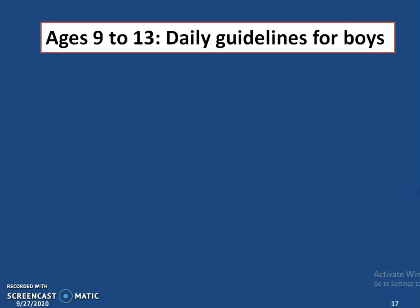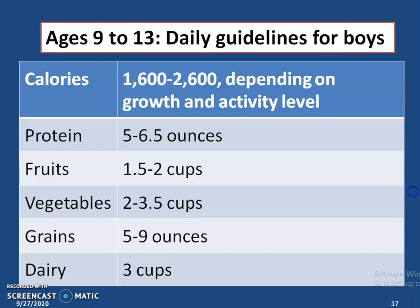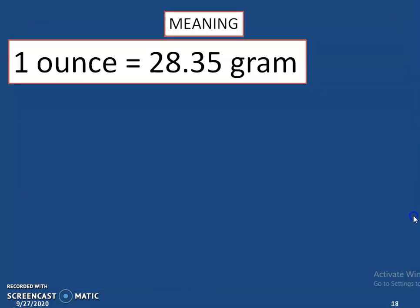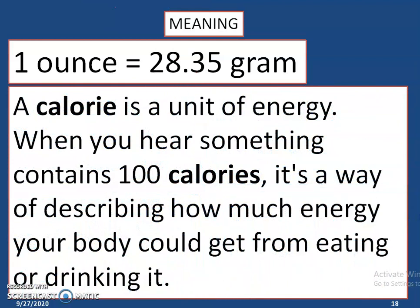Similarly, for boys in the same age group of 9 to 13, they should have 5 to 6.5 ounces of protein, 1.5 to 2 cups of fruits, 2 to 3.5 cups of vegetables, 5 to 9 ounces of grains, and 3 cups of dairy. Now, you may wonder what is 1 ounce — 1 ounce is equivalent to 28.35 grams. And what is a calorie? A calorie is a unit of energy. When you hear something contains 100 calories, it's a way of describing how much energy your body could get from eating or drinking it.